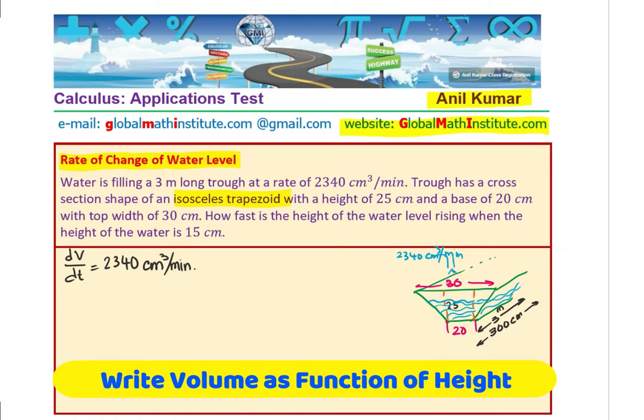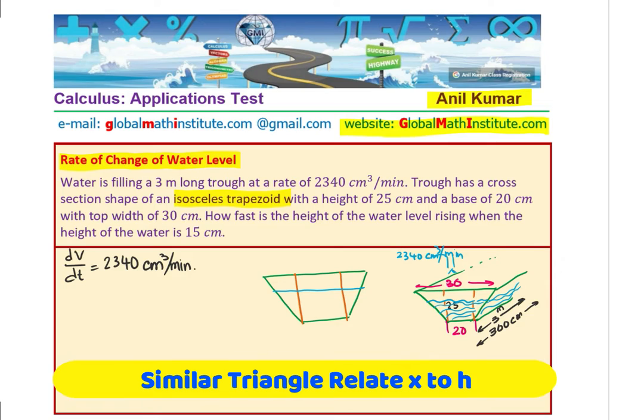As far as the trapezoid is concerned, let us have a second look at it. Let me make it slightly bigger. How do we relate the area of cross section? Let us say we are interested at any particular instance of time when water level is given by this blue line. We know this is 20 and that one is 30. Isosceles means both are same, and therefore the two sides will be 5 and 5.